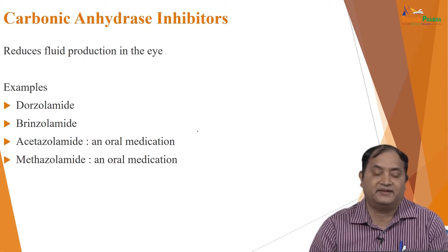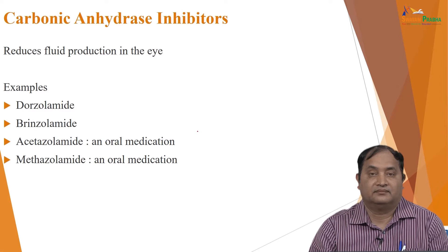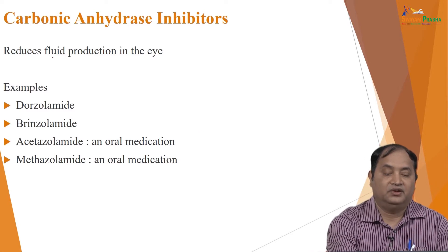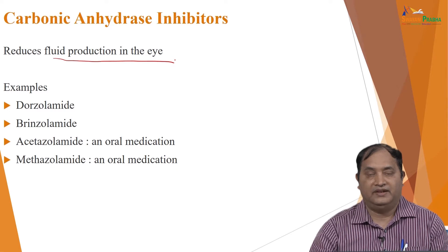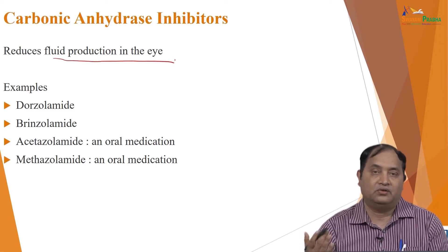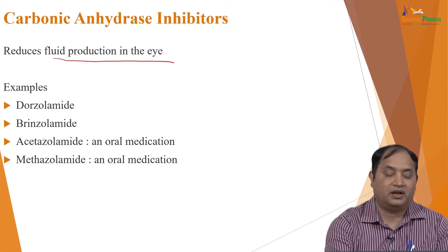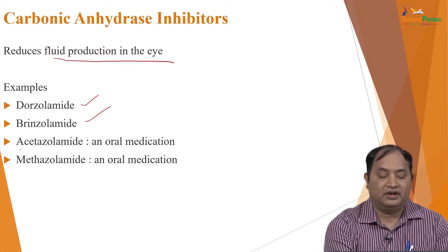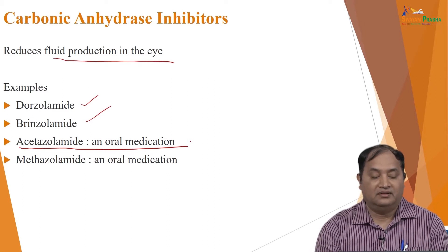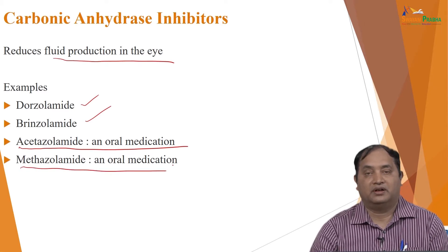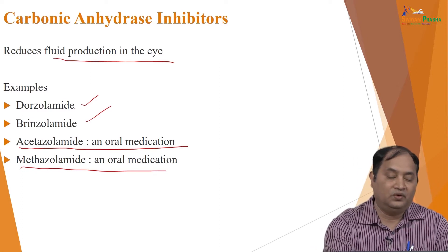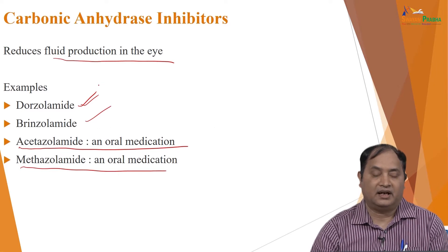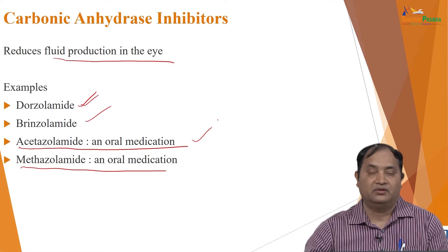The third group is carbonic anhydrase inhibitors. These basically act to reduce fluid production in the eyes, and have several other uses beyond ocular use as well. Typical examples include dorzolamide and brinzolamide. Older drugs include acetazolamide, which is an oral medication, and methazolamide, also given orally. There are newer carbonic anhydrase inhibitors as well as already established ones which are commonly used.